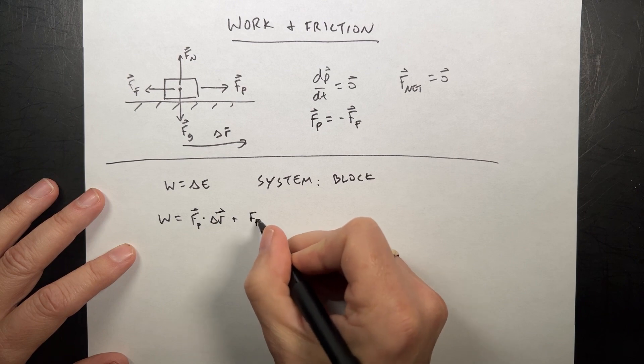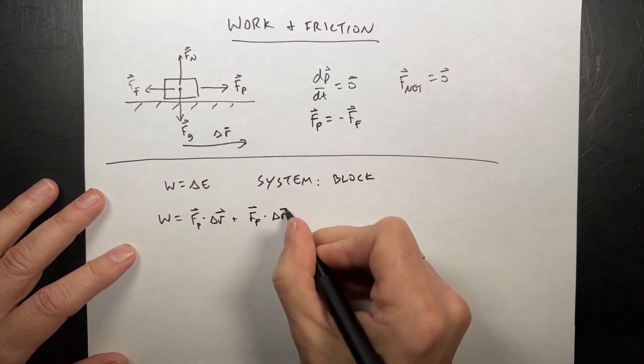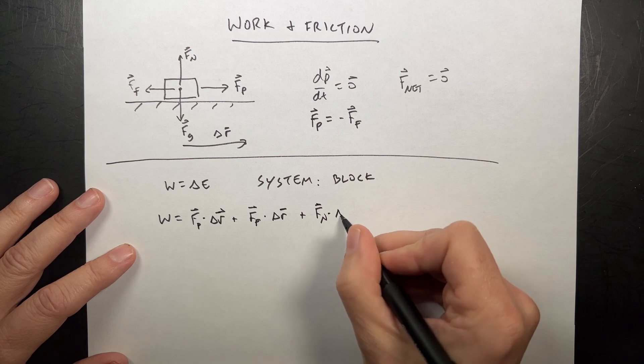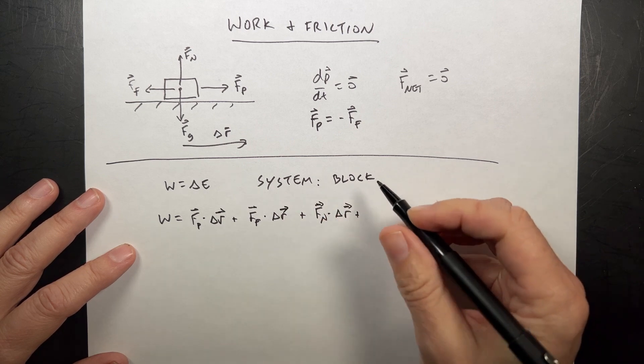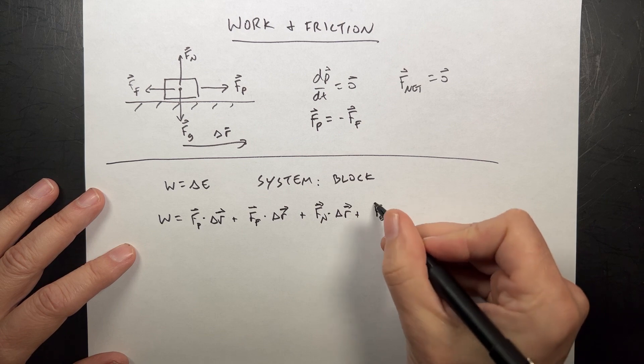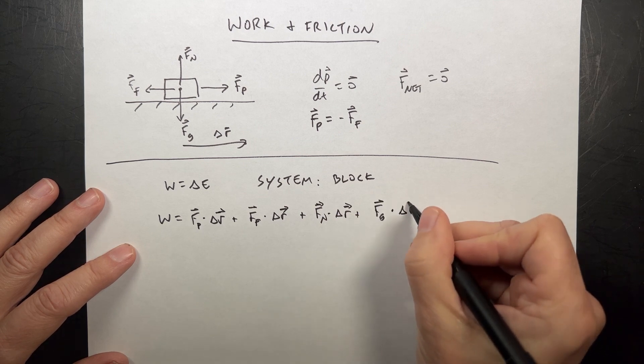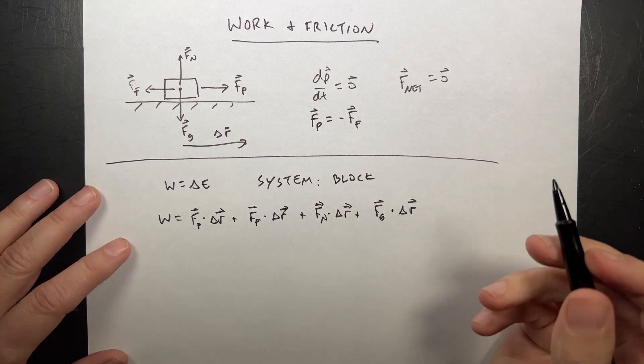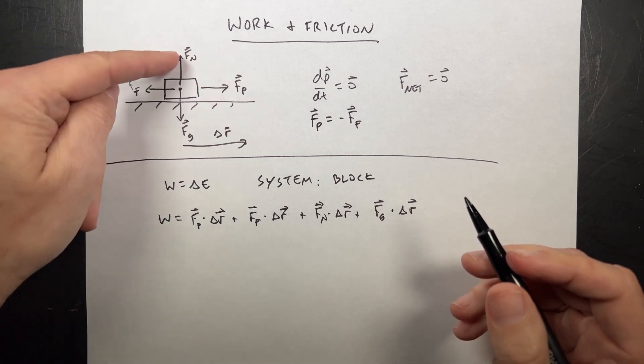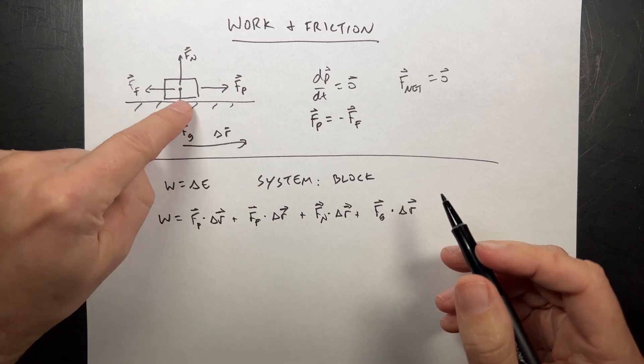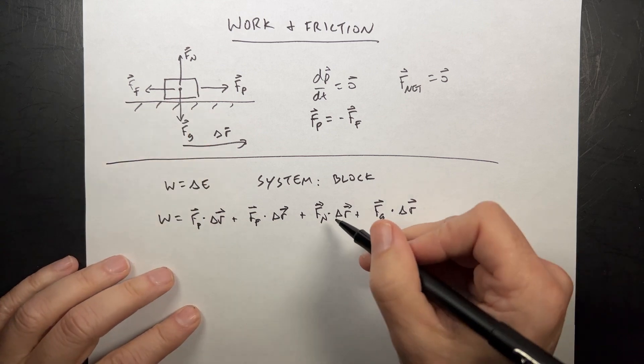Plus Ffriction dot delta r, plus Fnormal dot delta r. These are all vectors. Plus Fgravity dot delta r. Okay, now two of these are automatically zero. Since I'm moving along the table this way, the normal force and gravity are both perpendicular to that. So both of these are zero.